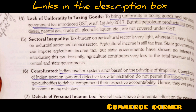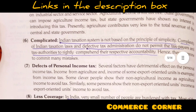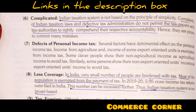The next defect is sectoral inequality — comparing agriculture and industry sectors, the agriculture sector is taxed less as compared to the industrial sector. Next is complicated — the principle of simplicity is not followed; complicated rules exist and tax authorities have to deal with complex processes. The defects of personal income tax include: some people are exempted, some people avoid tax, and non-agricultural income is sometimes mixed with agricultural income, leading to less coverage overall.